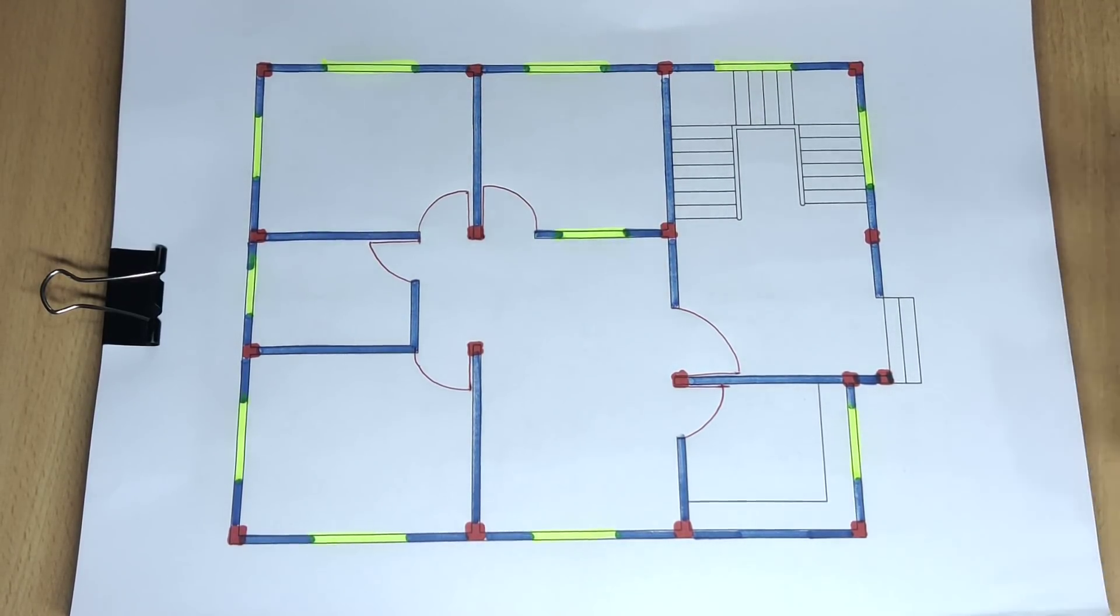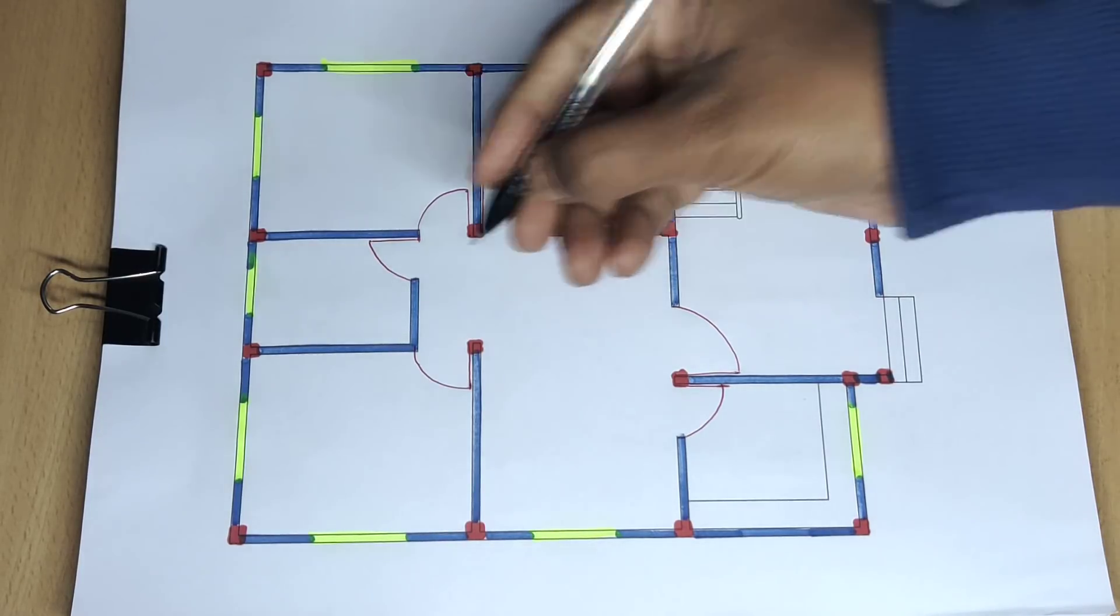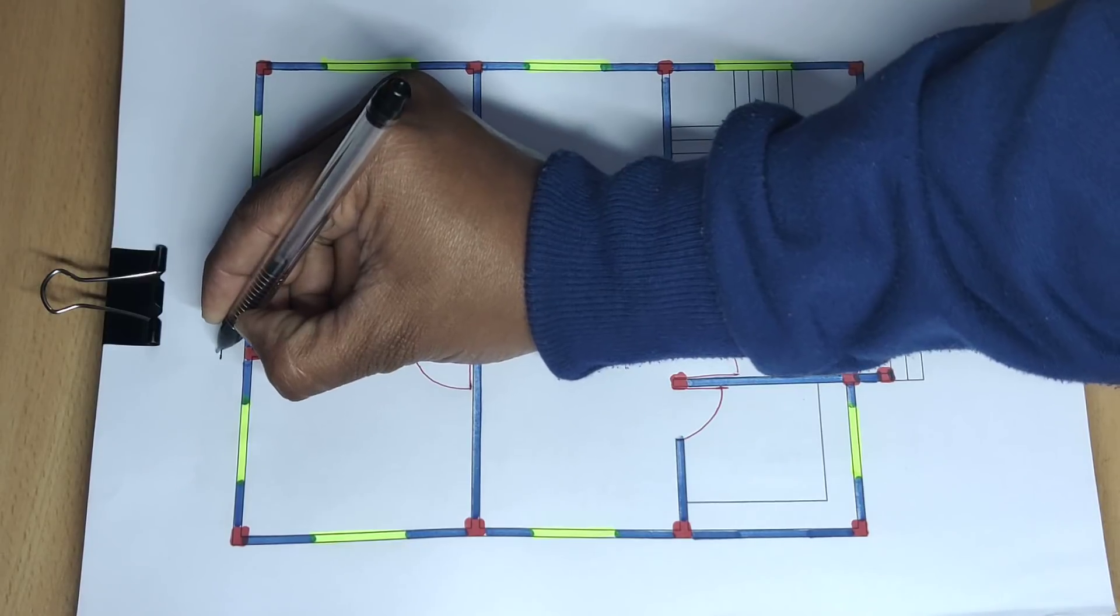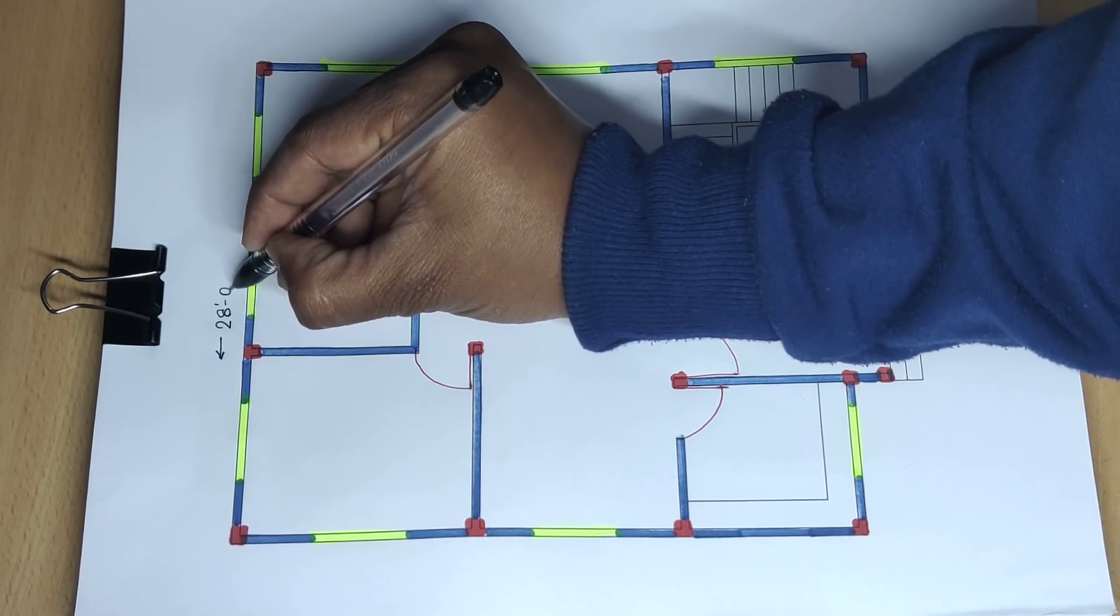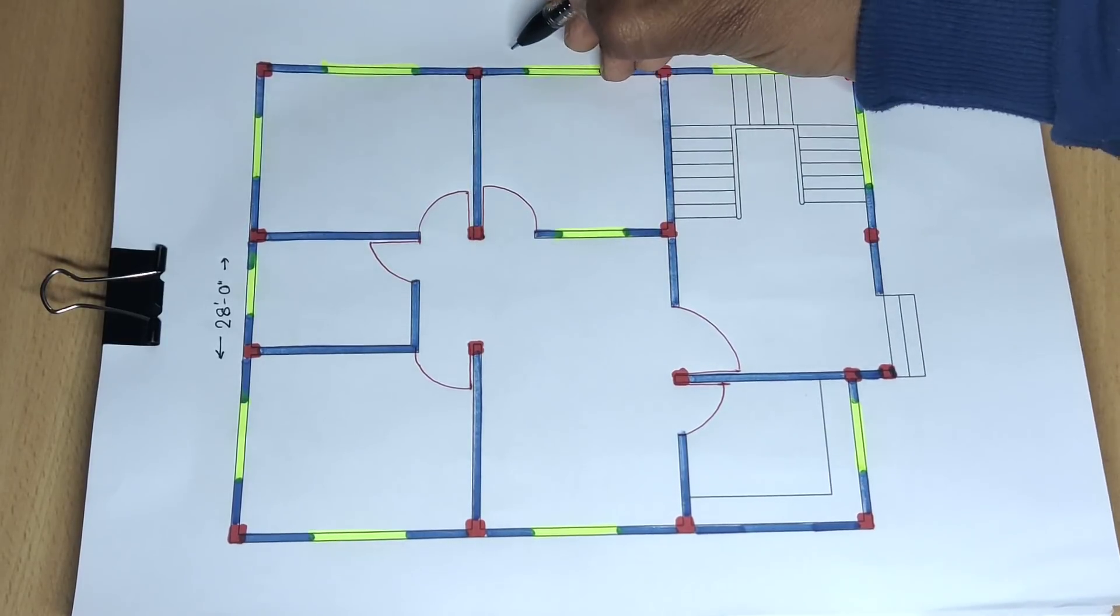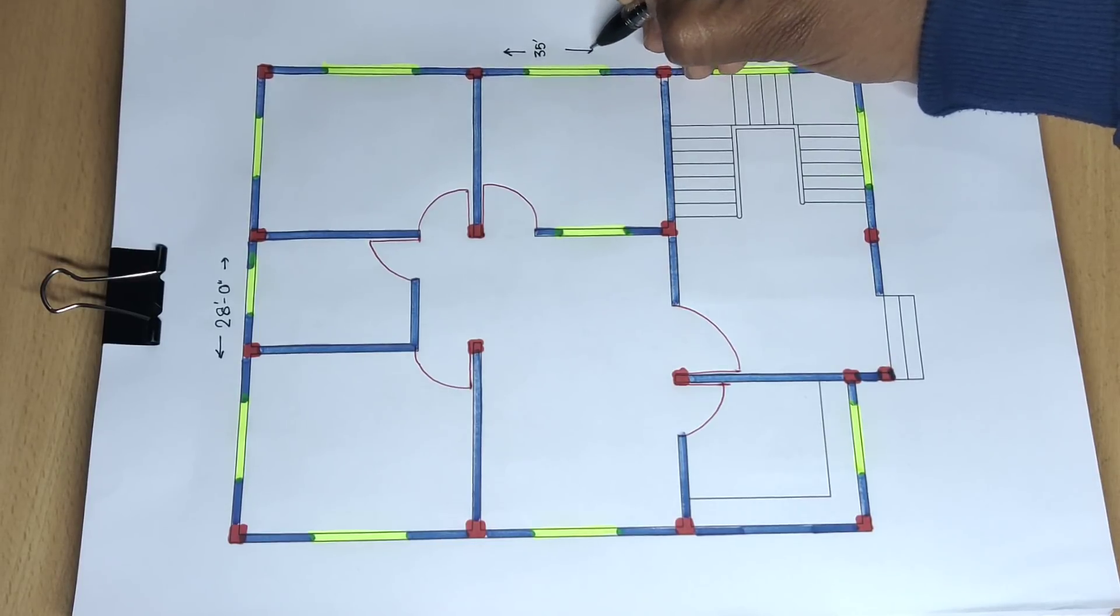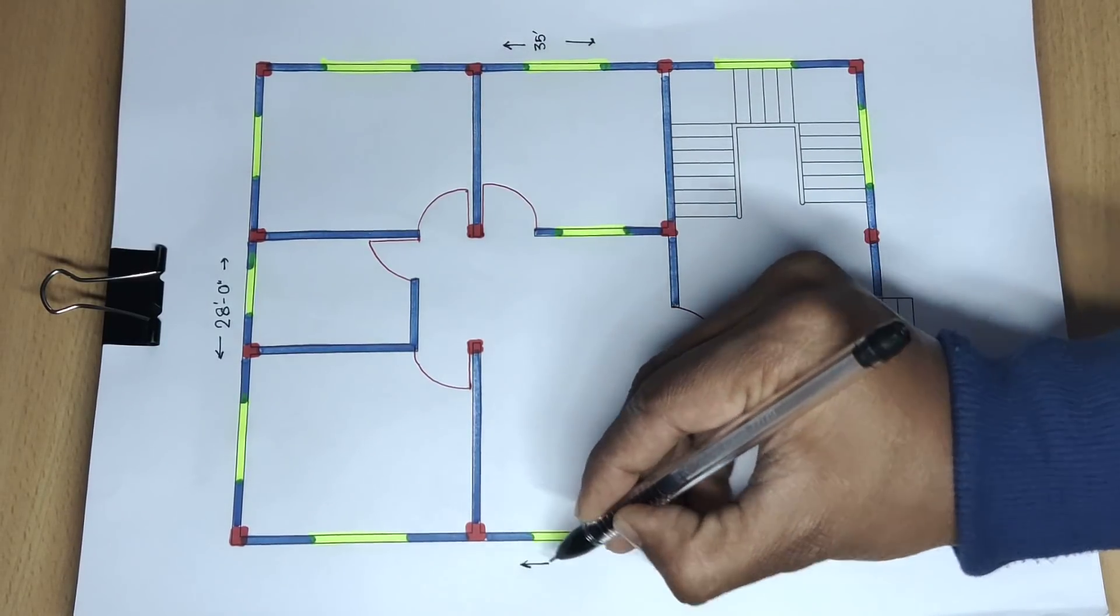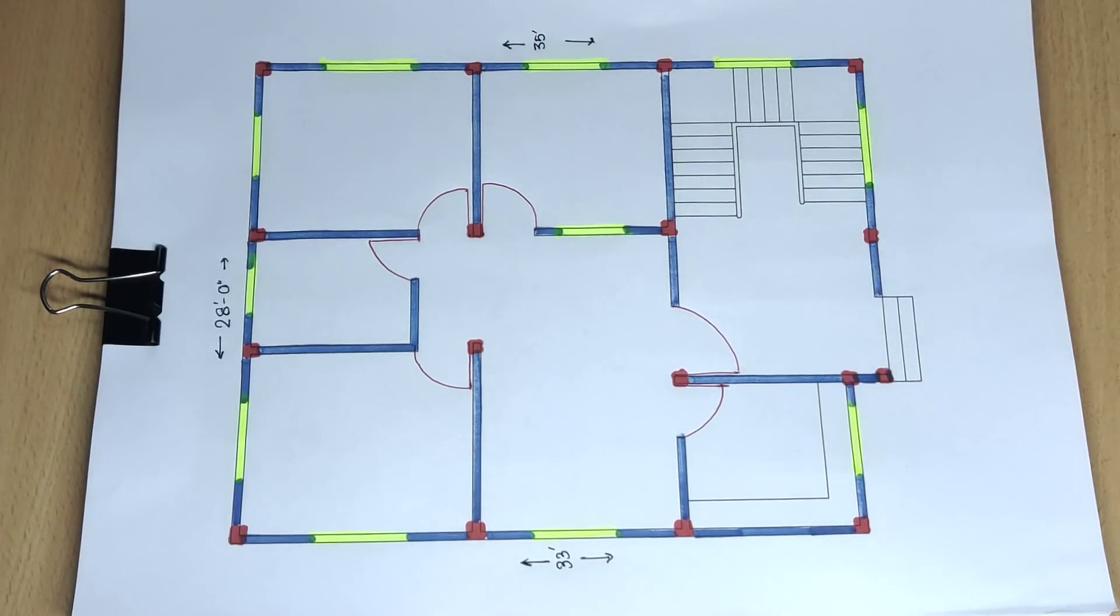Position details for the drawing start here - 28 feet 0 inch by 35 feet 0 inch. This is the front side.